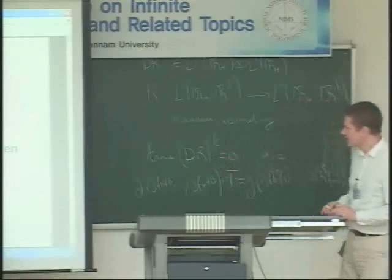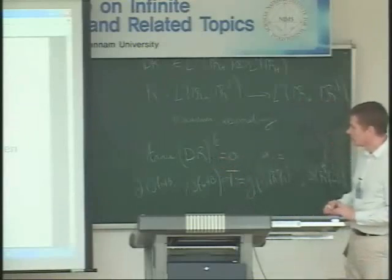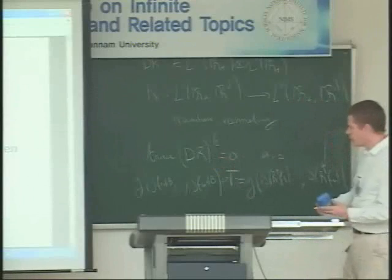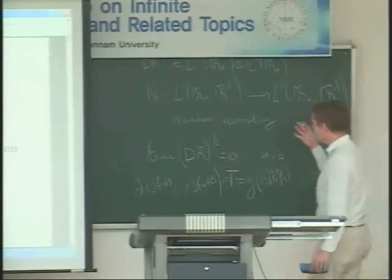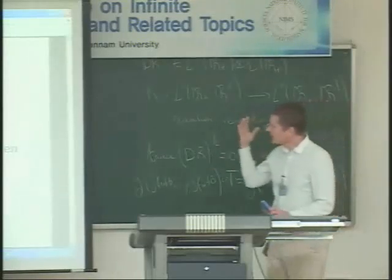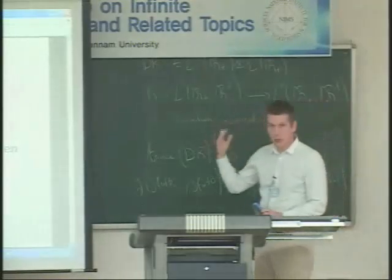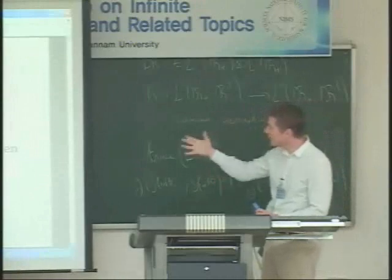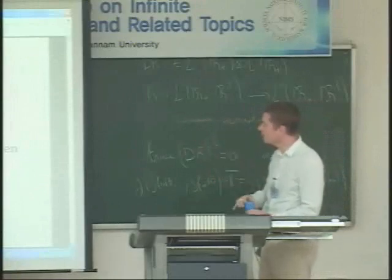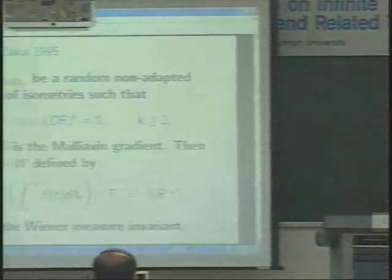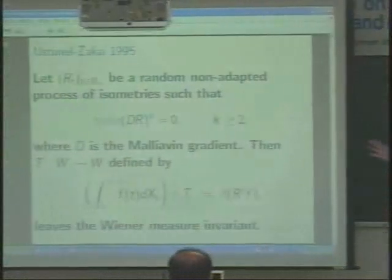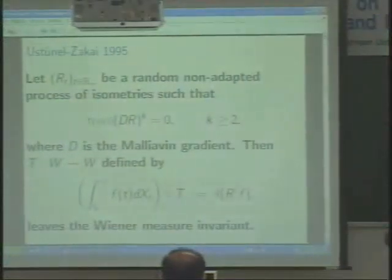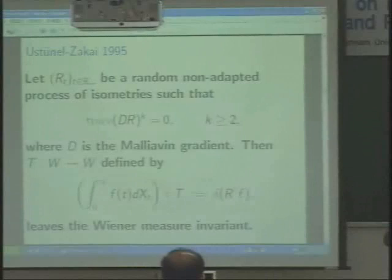Of course, in the adapted case this condition is satisfied. The trace is zero when r is an adapted transformation. So what I want to do in this talk is focus on the Poisson case. But before that, I will recall the Wiener case and present a simplified proof in the Wiener case first. Later on, we will use this argument in the Poisson case, but the focus of the talk is really on the Poisson case.